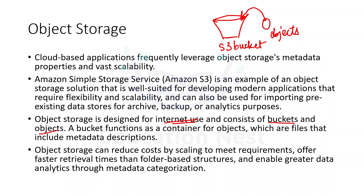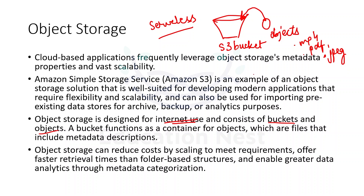S3 (Simple Storage Service) is an example of an object storage solution on AWS. It is a serverless solution, meaning we can store virtually infinite amounts of data inside these buckets. S3 is very useful for archiving, backup, and analytical purposes where we want to store huge amounts of data. Buckets contain objects, which are simply files — any kind of file such as MP4, PDF, or JPEG. Object storage will be the major focus of this module.